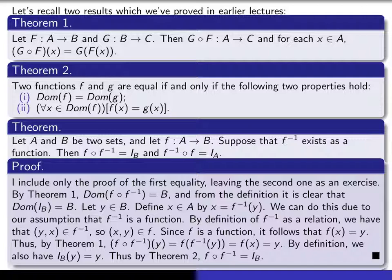So since f inverse is assumed to be a function from B into A, it follows from theorem one that f inverse composed with f is a function from B into B, and in particular, its domain is B. And also from the definition, it's perfectly clear that the domain of the identity function on B is also B.